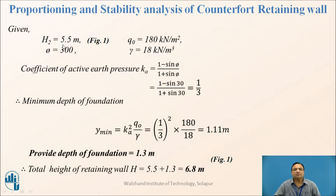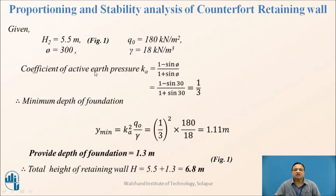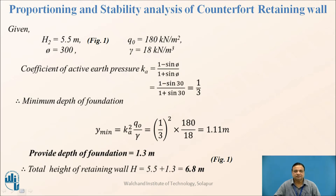H2 is the height from ground level to the top, which is 5.5 meters, as shown in figure 1. The total height H equals H2 plus the minimum foundation depth y. The coefficient of active earth pressure Ka = (1 − sin φ)/(1 + sin φ) = 1/3. Minimum depth of foundation y_min = Ka² × (SBC/γ) = (1/3)² × (180/18) = 1.11 m. We provide a depth of 1.3 m, giving total height H = 5.5 + 1.3 = 6.8 m.